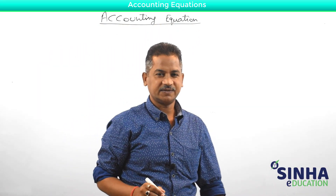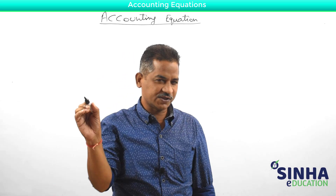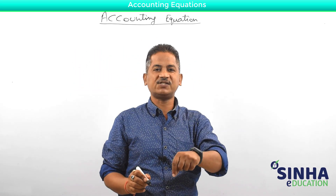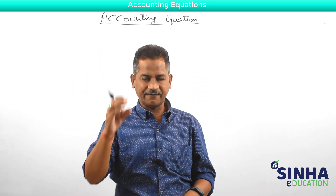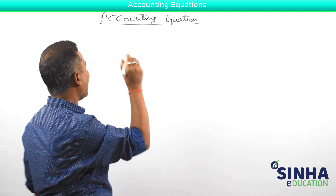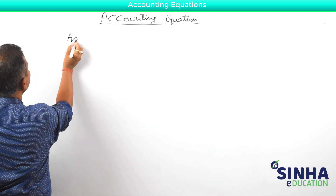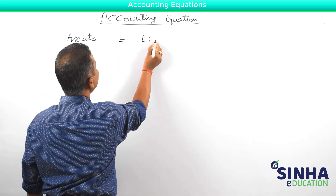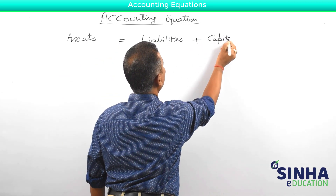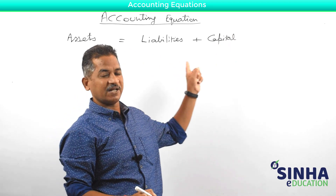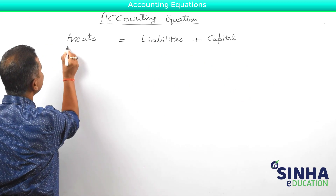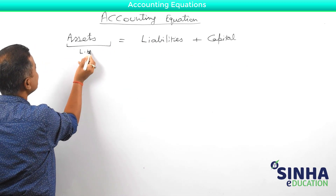The accounting equation states that for any business, at any point of time, this equation is verified for all business houses — whether small or very large. It certifies that for all business concerns, at any point of time, the sum total of all assets is always equal to the sum total of liabilities plus capital. This mathematical equation is called the accounting equation.